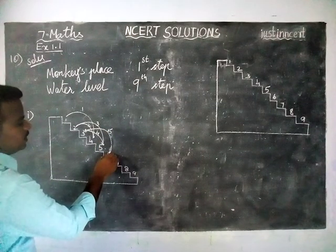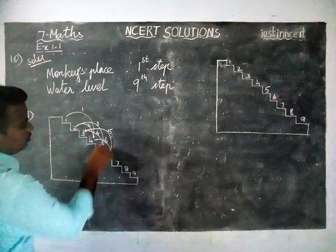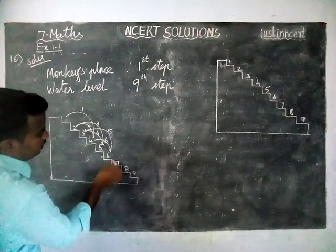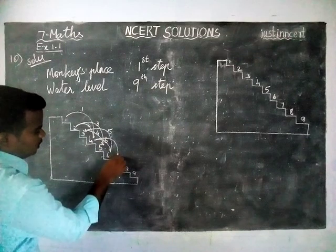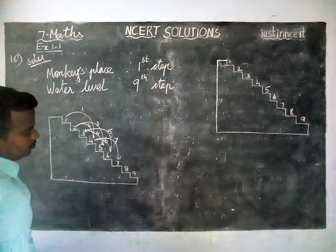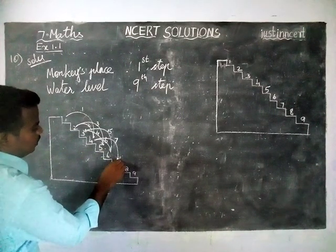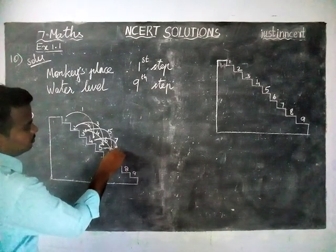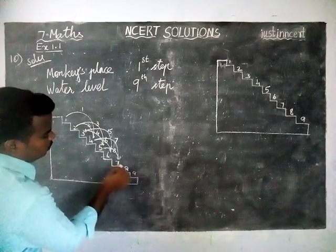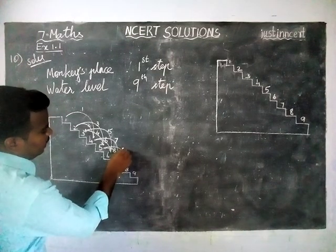From here again it is jumping two steps back — one, two. Then three steps down — one, two, three. It is reaching seven. This is the seventh step. Again from seven it is jumping back two steps — one, two. It is reaching five. This is the eighth jump.